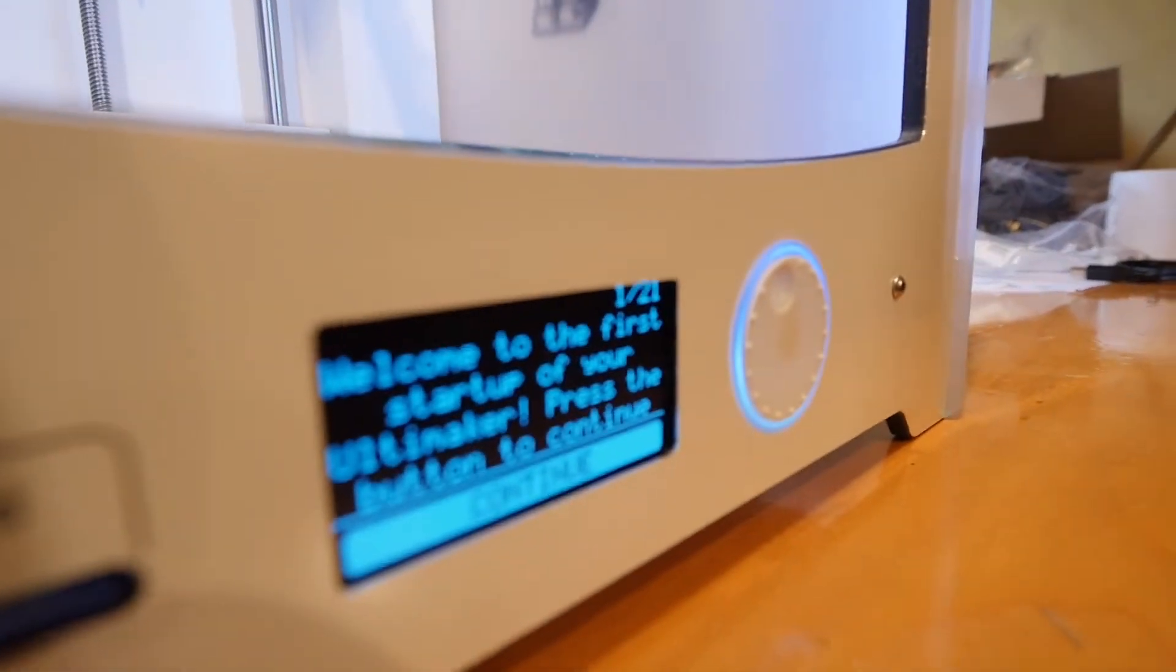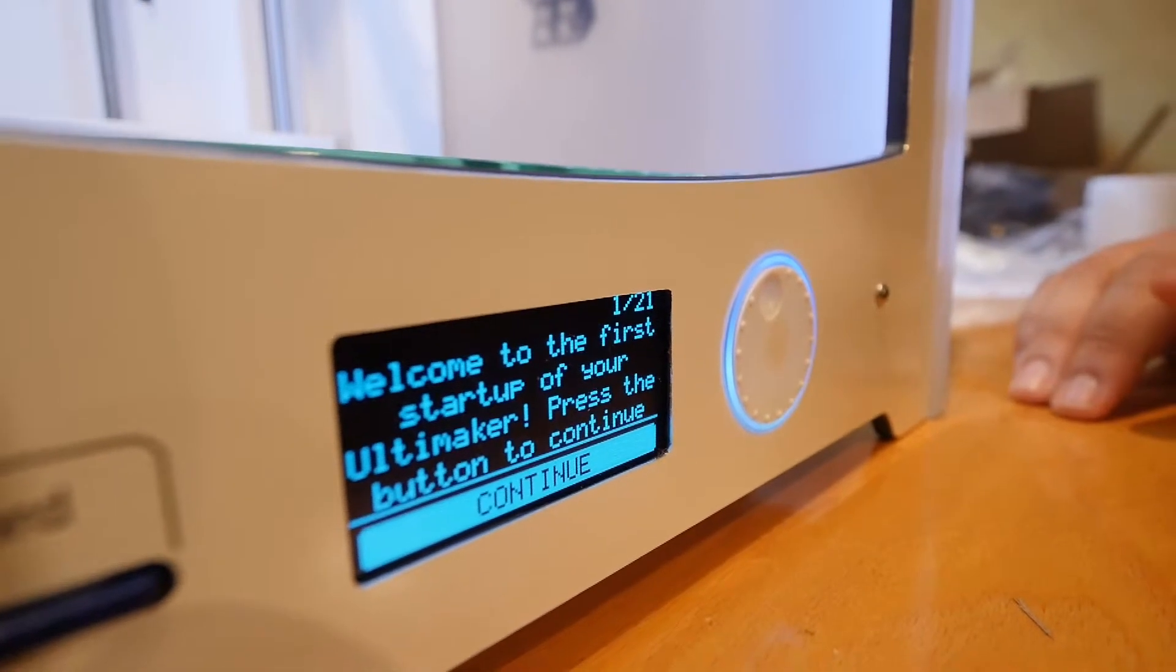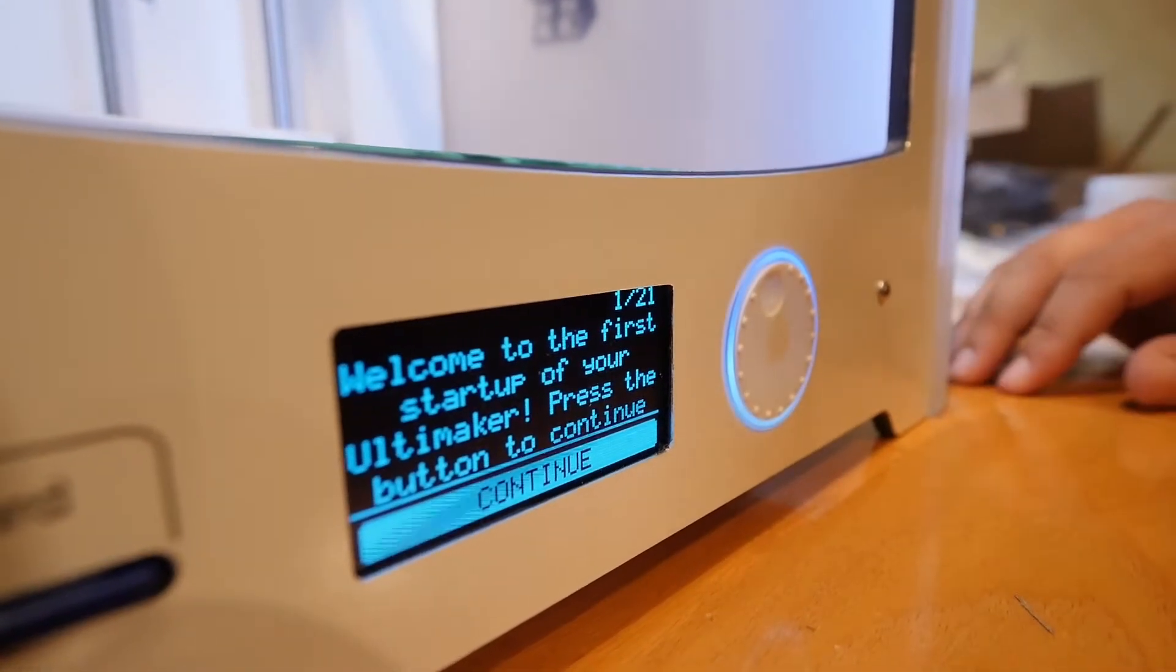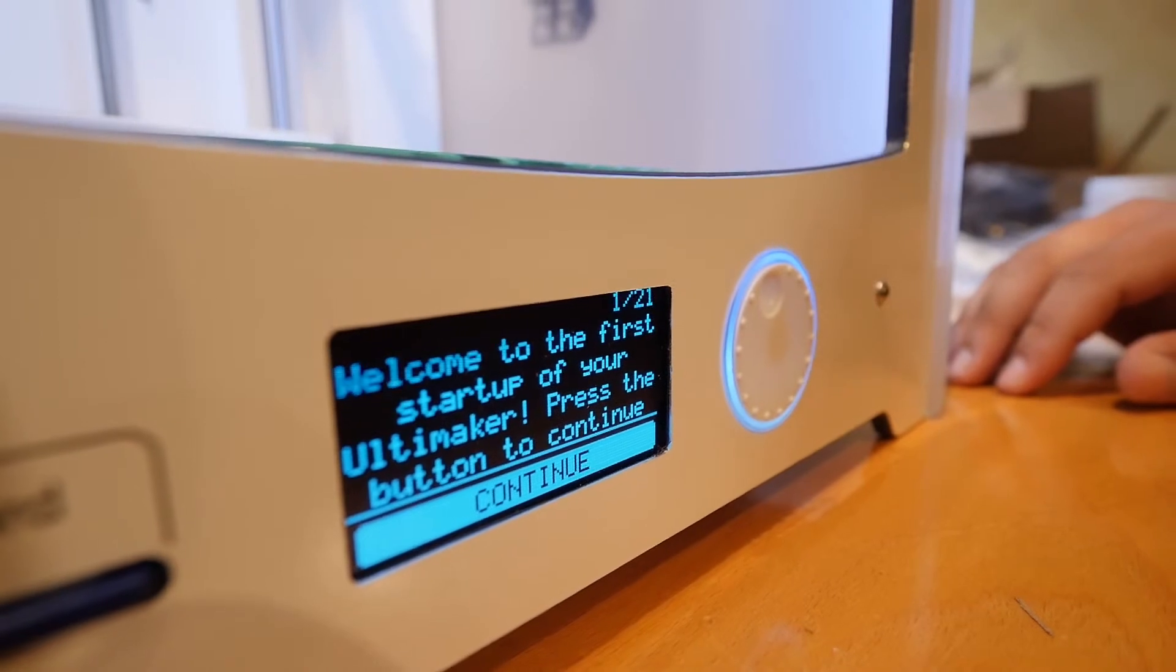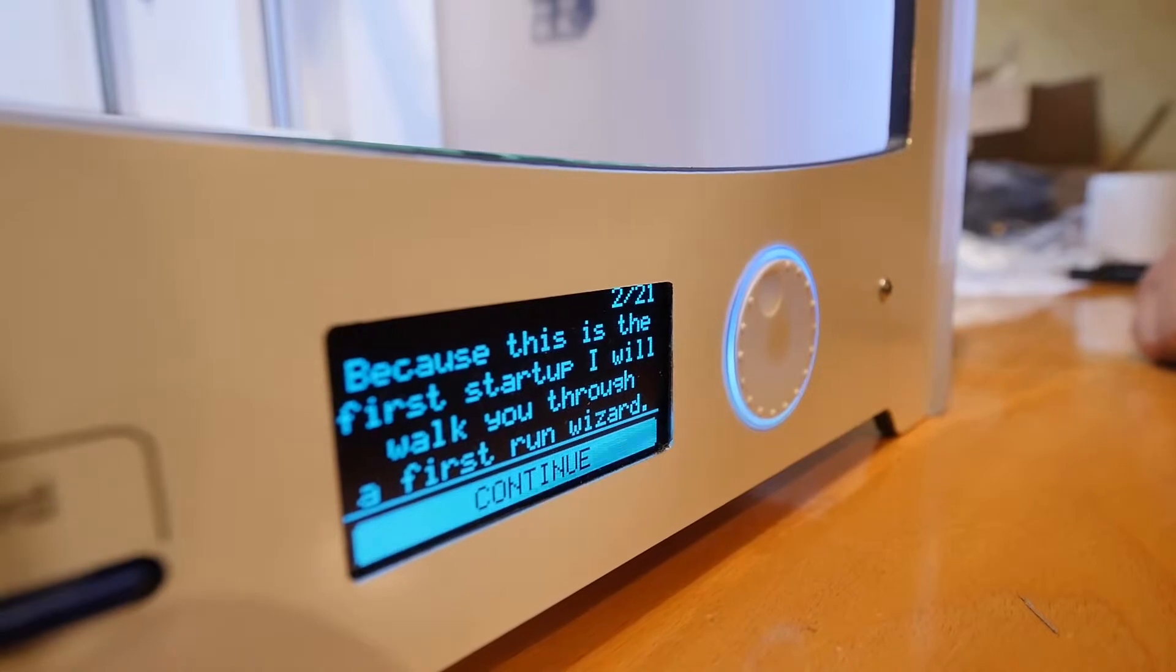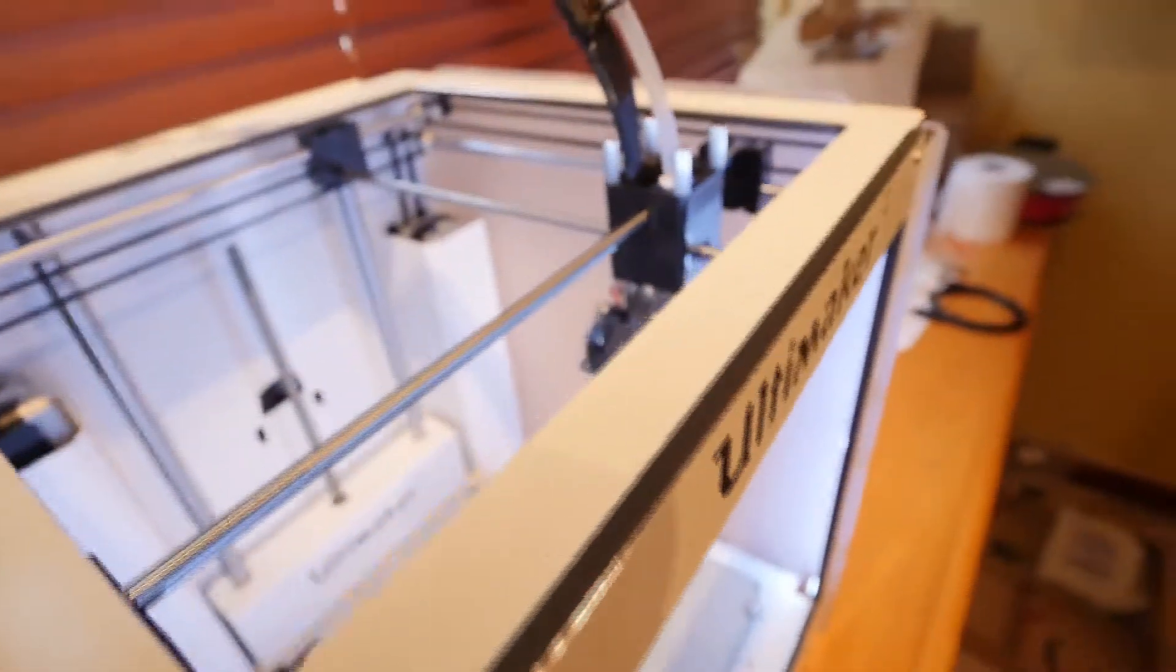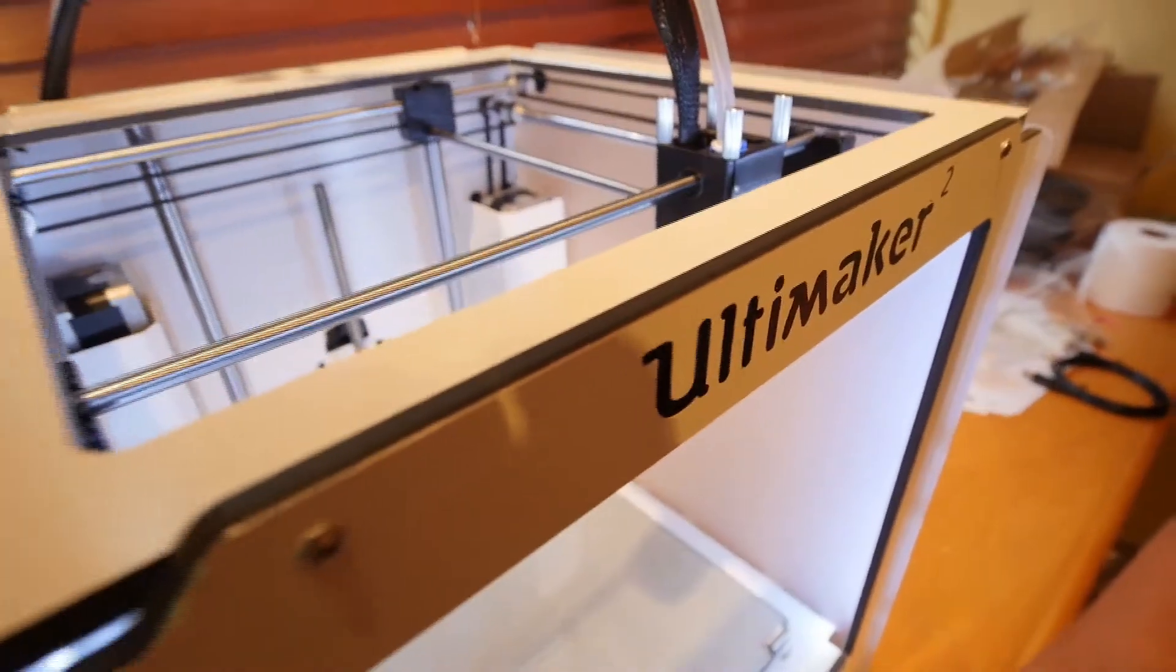So now we are welcomed by the Ultimaker with a little message here on the LCD screen that says Welcome to the first startup of your Ultimaker. Press the button to continue. So we are continuing. And because this is our first startup, I will walk you through a first run wizard. That's what the Ultimaker is telling us. So we will continue.